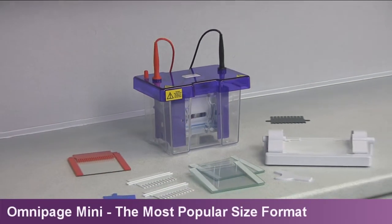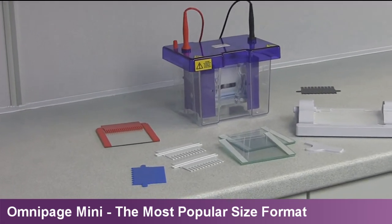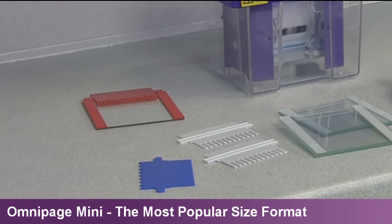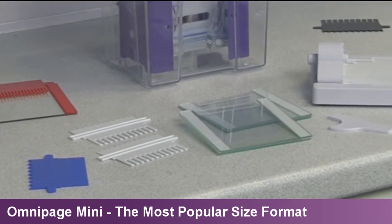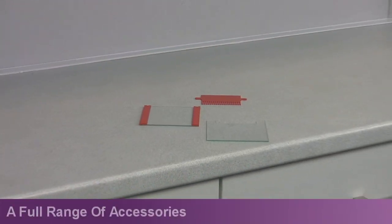Each Omnipage Mini may be supplied with a full range of combs, glass plates and accessories to cast and run up to four mini gels. Color-coded combs and spacers allow the user to select their gel thickness and sample throughput.